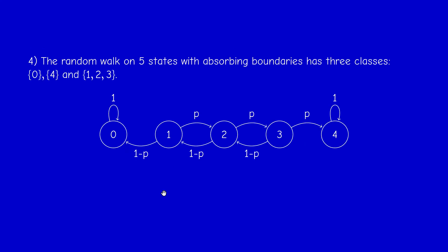Next example: the random walk on five states with absorbing boundaries. This is not irreducible. We can go from three to four but cannot go back, so four is accessible from three but three is not accessible from four. There are three communication classes: zero communicates only with itself, four communicates only with itself, and states one to three communicate with each other. So there are three classes: {0}, {4}, and {1, 2, 3}. It is not irreducible.